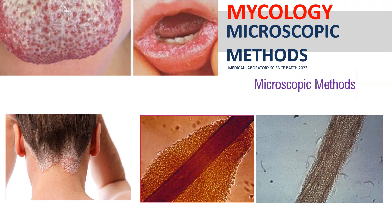We need to define first the difference between endothrix and ectothrix. The prefix 'endo' means inside, while 'exo' or 'ecto' means outside. Some reference books use the term 'exo' and some use 'ecto' — either of the two you need to memorize. Endothrix refers to dermatophyte infection of the hair that invades the hair shaft and internalizes into the hair cell — the etiologic agent infects inside the hair shaft, hence it is called endothrix.